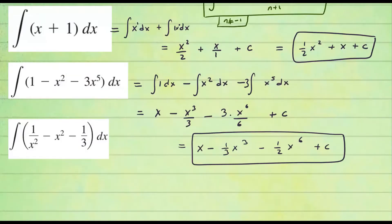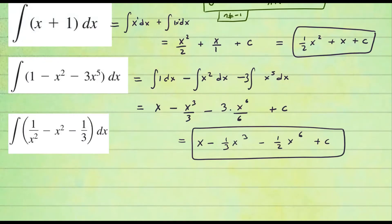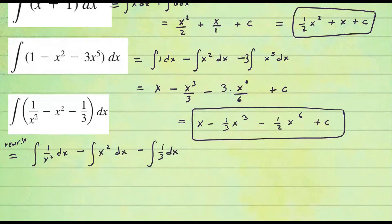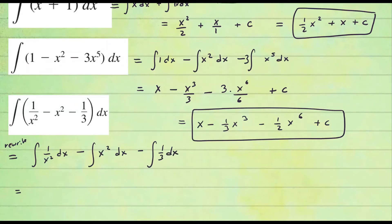For the third problem, the terms are not written in power form, so we need to rewrite them. We have the integral of one over x squared dx, minus the integral of x squared dx, plus the integral of one third dx. Using laws of exponents, one over x squared becomes x to the negative two dx. Now we can start integrating using the power rule.